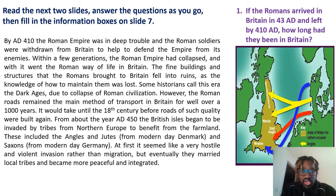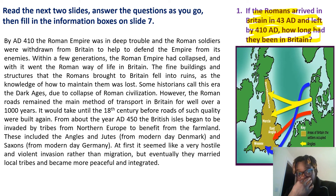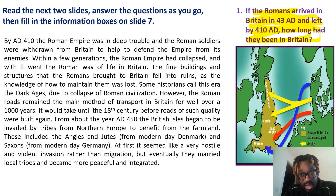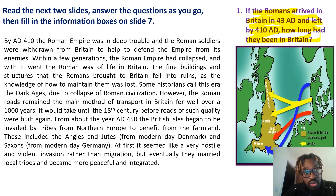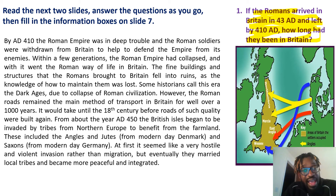The first task and the key question you're going to answer is: if the Romans arrived in Britain in 43 AD and left by 410 AD, how long had they been in Britain? To answer that you're going to have to read the text on screen. I'm not going to read it to you — when you get to this part of the narration, pause the slide and read through the information carefully. It talks about how by AD 410 the Roman Empire was in deep trouble and Roman soldiers were withdrawn from Britain to help defend the empire from its enemies, essentially covering how the Roman Empire collapsed and who came next.